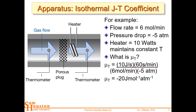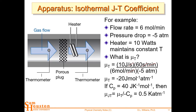For a gas with a heat capacity of 40 joules per mole Kelvin, we calculate the Joule-Thompson coefficient — μT divided by CP — and get 0.5 Kelvin per atmosphere. So we get about a half-Kelvin drop for every atmosphere change. You'd need a pretty high pressure differential to get a decent cooling effect for this particular gas, and every gas is different.